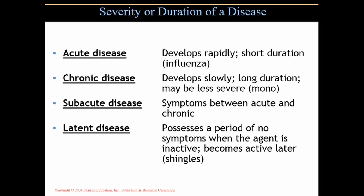A latent disease — like shingles — possesses a period of no symptoms when the agent is inactive, and then later becomes active for one reason or another; sometimes there's no explanation, it just reactivates. You had chicken pox, the varicella virus remains latent in the dorsal root ganglia of the spinal cord, and then it reactivates later in life as the disease we call shingles.